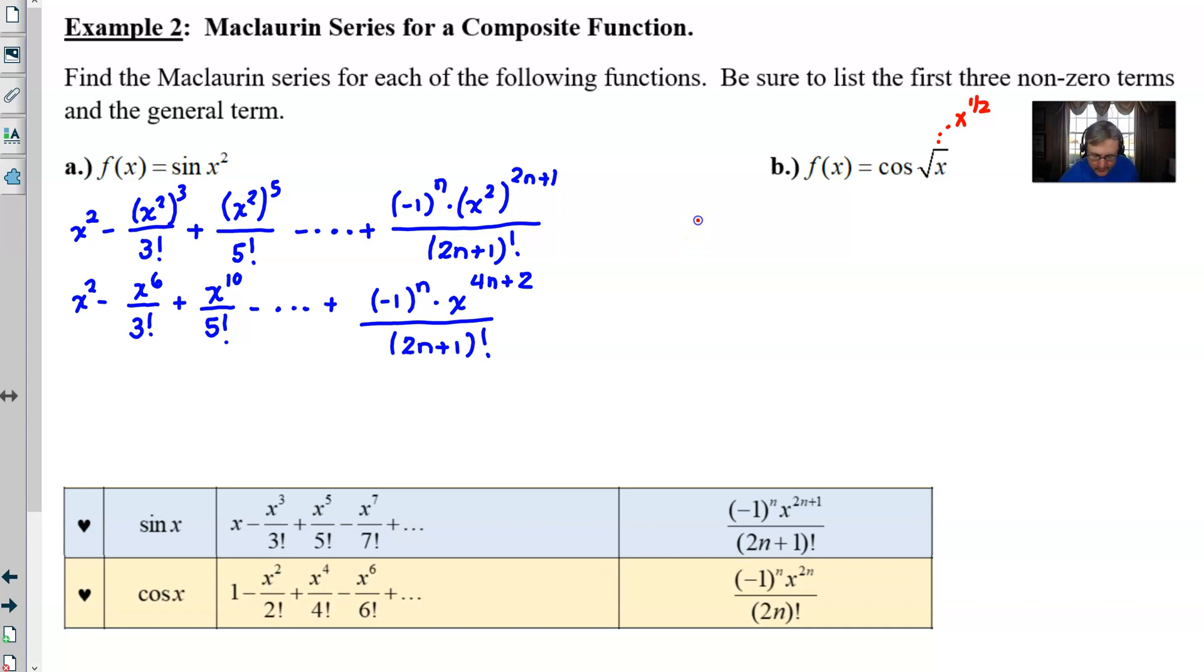And so we start it with 1 minus, and then as I said before, the x replaces with, I can go ahead and use square root of x here. I think that's going to work fine for us. And then I'll use square root of x again for this third non-zero term. And that's the non-simplified version. And then if I move on to the general term unsimplified, then as you can see, I would just simply replace that x with square root of x, and then I'll worry about simplifying it a bit later.